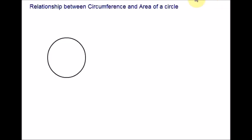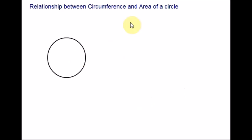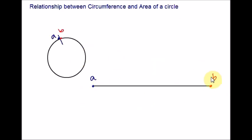The circumference of a circle is its perimeter, or the distance around its edge. If we broke the circle and bent it into one flat line, the length of that line would be its circumference.